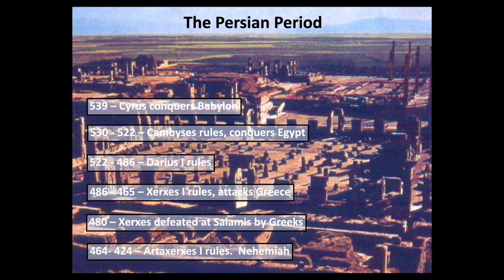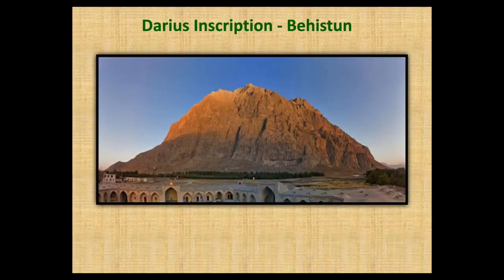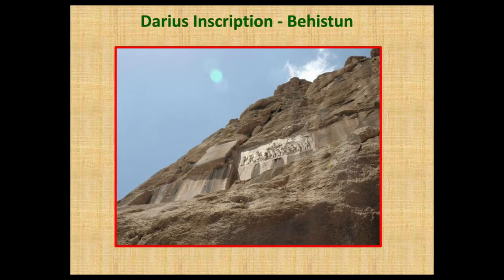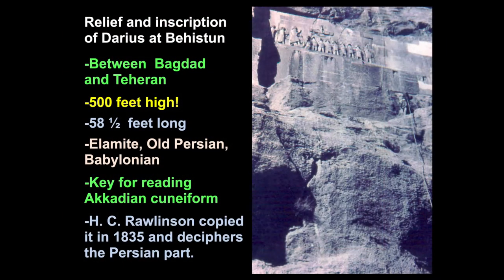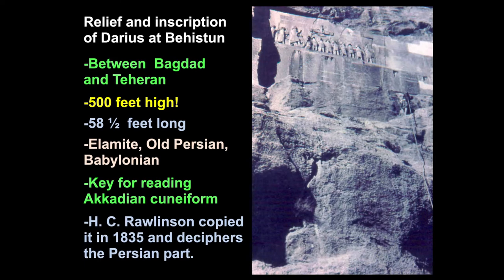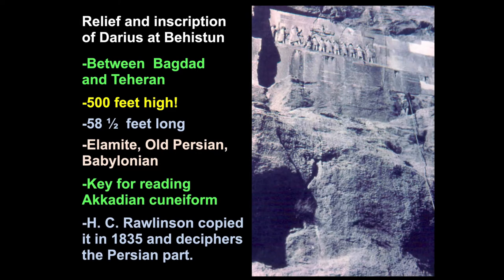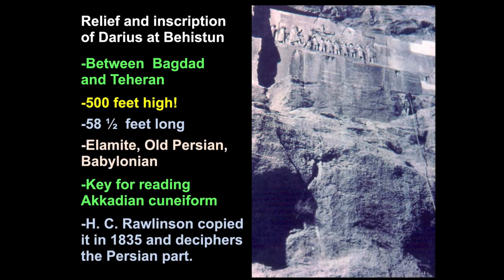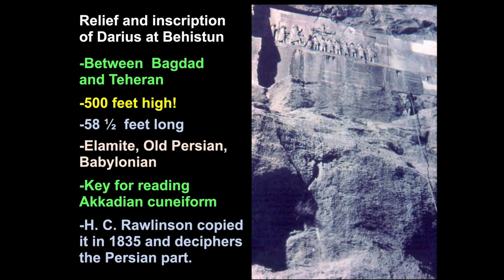Artaxerxes rules next in Persia, and it's during the time of Nehemiah, and they have contact as well. Interestingly, between Baghdad and Tehran the road goes through some mountains, and on one of the mountains there is a relief and inscription from Darius, king of Persia. It's over 500 feet high to reach the inscription. It's 58 and a half feet long — the largest inscription in the Middle East. It's in Elamite, Old Persian, and Babylonian, and it became the key for deciphering the reading of these languages.